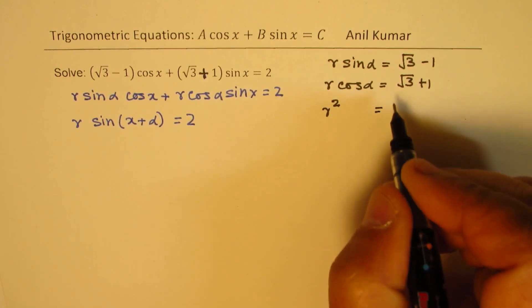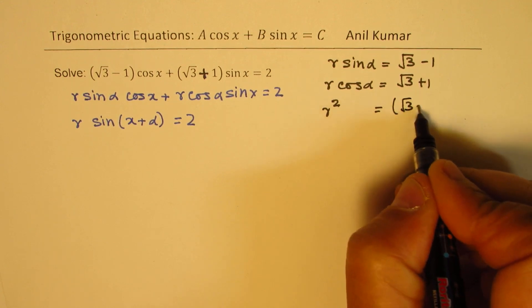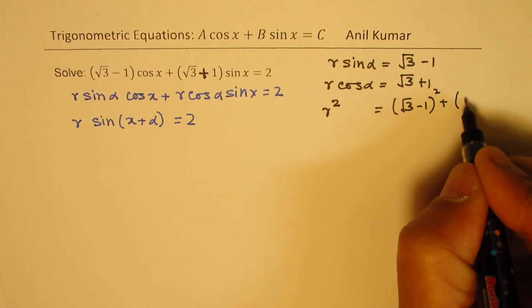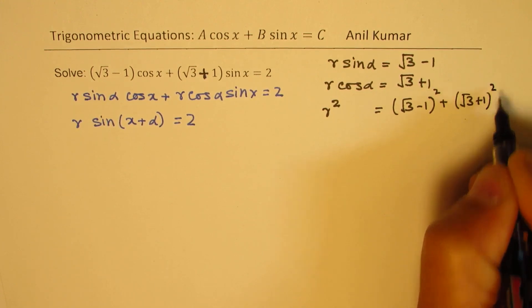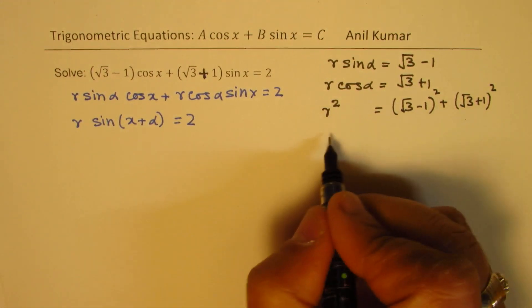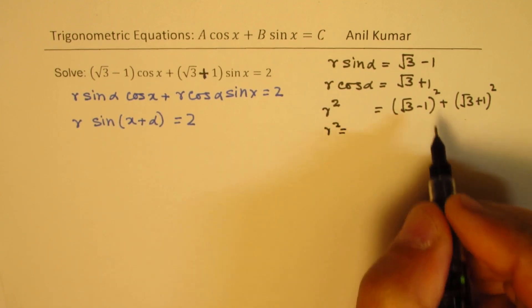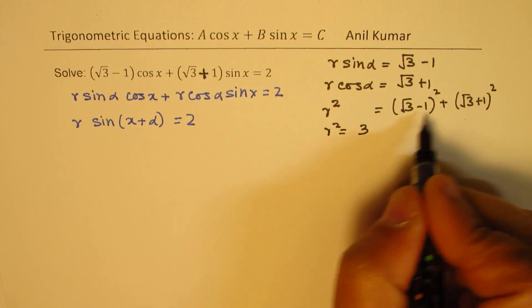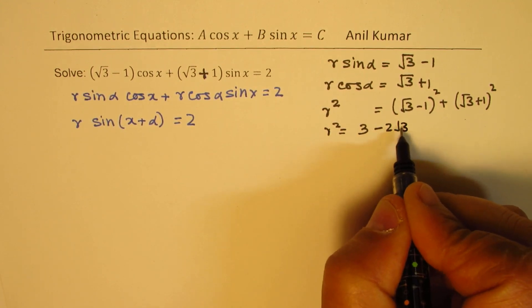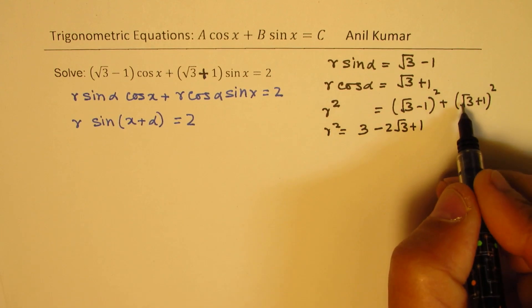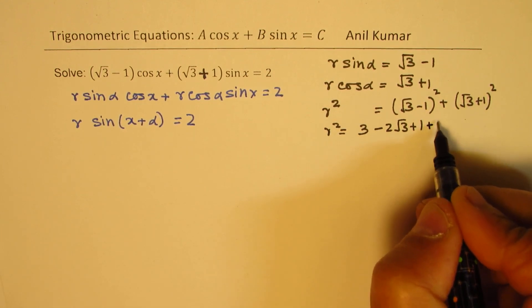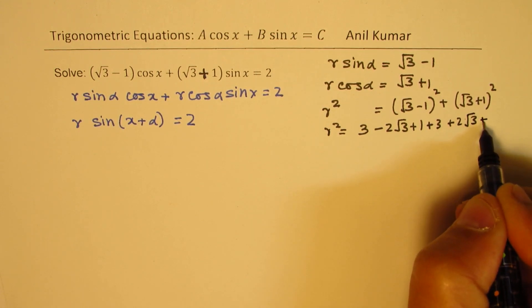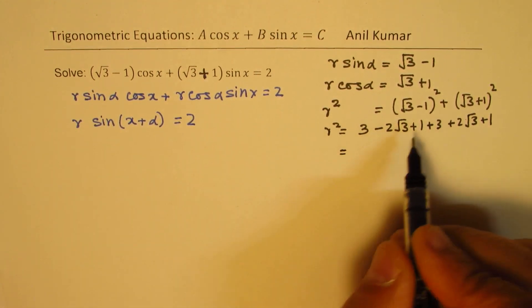So r squared equals to square root of 3 minus 1 whole square plus square root of 3 plus 1 whole square. We can simplify this. So this is 3 minus 2 times square root of 3 plus 1, and squaring this we get 3 plus 2 square root of 3 plus 1.